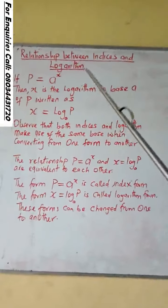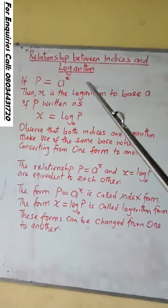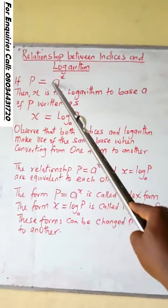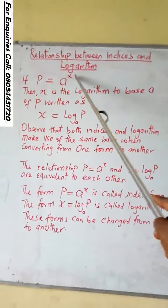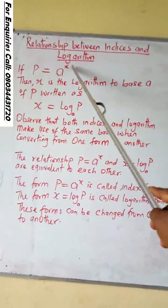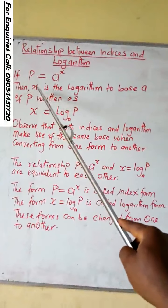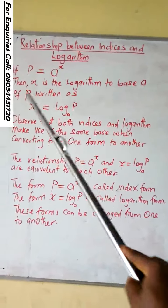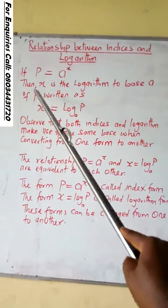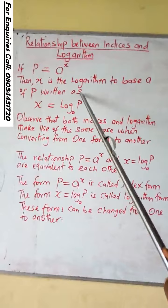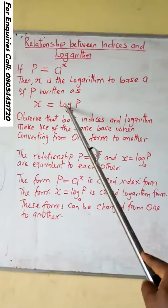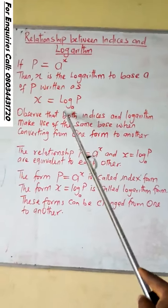Relationship between indices and logarithm. If P equals A to the power of X, then X is the logarithm to base A of P, written as X equals log P base A.